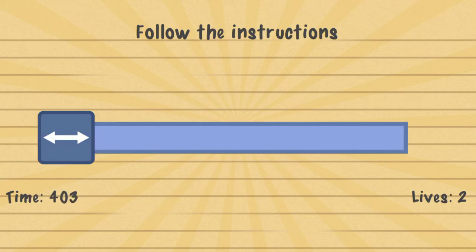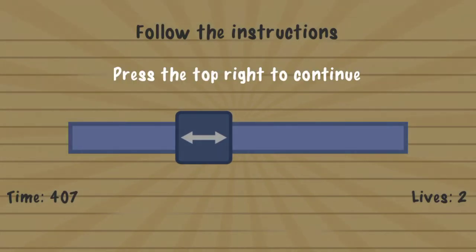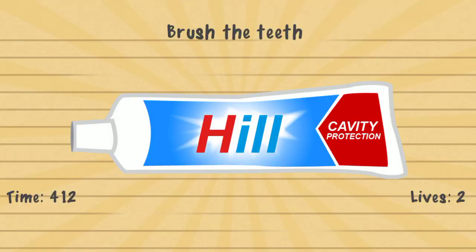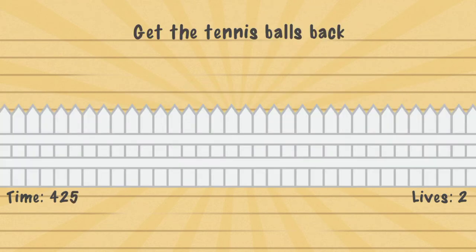Follow the instructions — you move the slider to the right until you find a text. Press the top right to continue — you tap the very top right. Look to whatever direction it tells you. Brush the teeth — you take the word 'brush' and then you move it over the word 'teeth'. Get the tennis balls back — you turn your device upside down and then tap the tennis balls going over the fence.